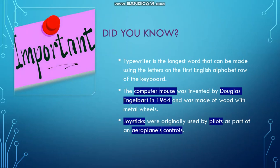Now let me tell you a few important things about computers. Do you know that 'typewriter' is the longest word that can be made using the letters on the first row of the English keyboard? Please try it and let me know. The computer mouse was first invented by Douglas Engelbart in 1964, and it was made of wood with metal wheels. And joysticks were originally used by pilots as part of an aeroplane's controls. These are three important points that you should remember.